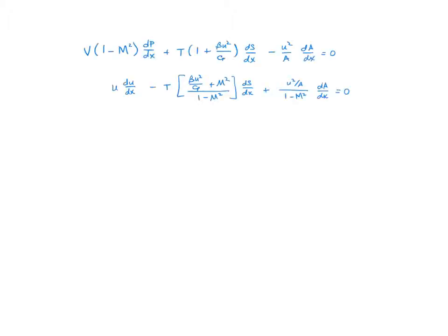One last thing: I'm going to turn these differentials into derivatives with respect to location or position x — asking how far through the duct we've gone. So we have V(1 − M²) dP/dx + T(1 + βU²/C_P) dS/dx − (U²/A) dA/dx = 0, relating P, S, and A with position. And U dU/dx − T(messy group) dS/dx + (U²/A)(1 − M²)⁻¹ dA/dx = 0, relating U, S, and A with position.